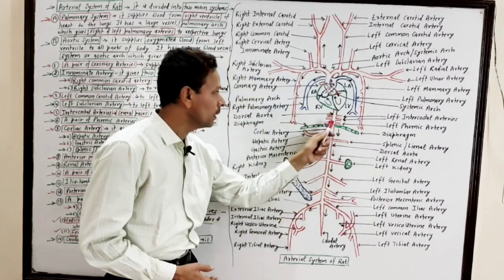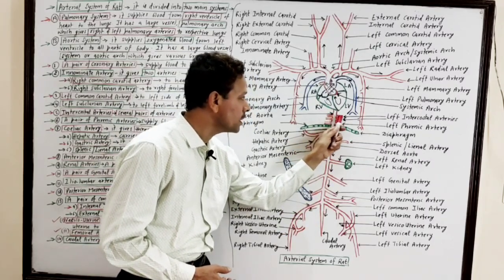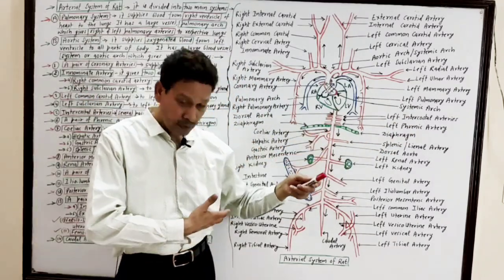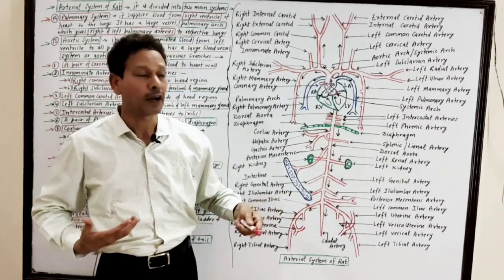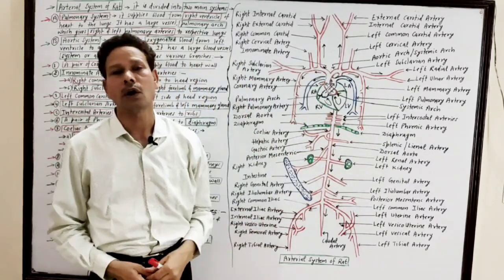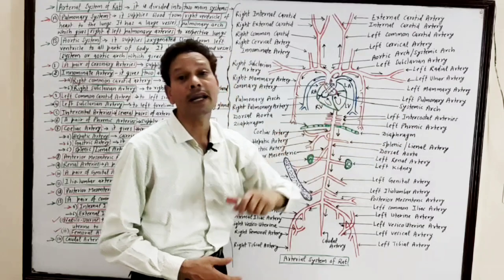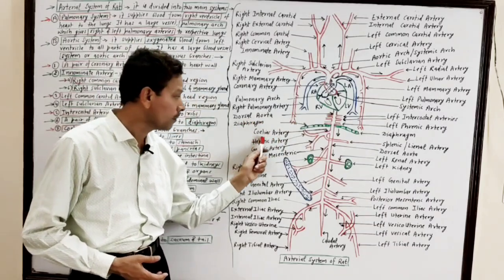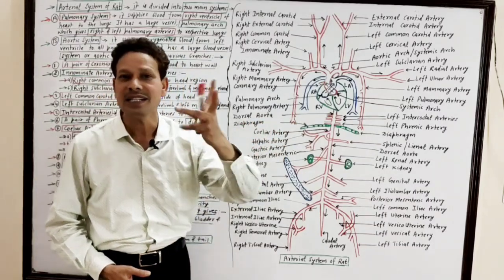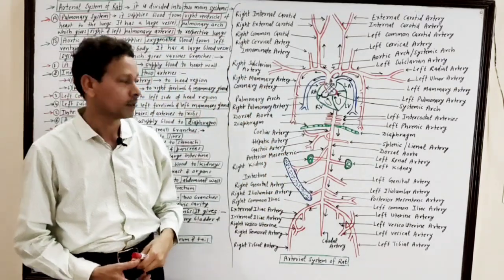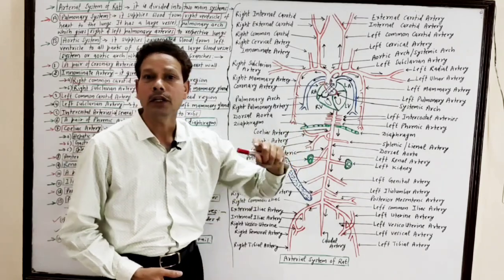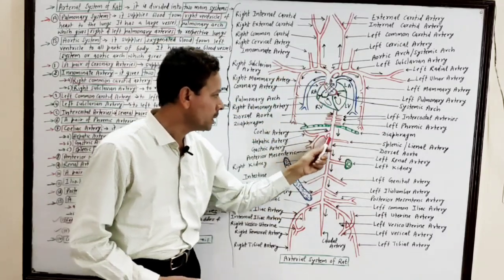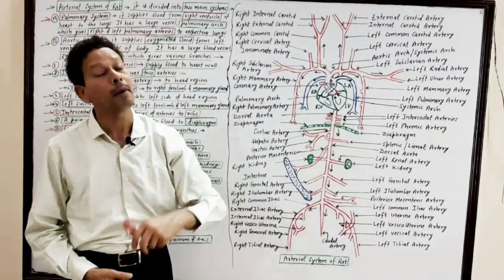The dorsal aorta gives several pairs of intercostal arteries to the thoracic region and ribs. The diaphragm receives oxygenated blood via a pair of phrenic arteries. Then in the abdominal region, a large blood vessel — the celiac artery — divides into three main branches: the hepatic artery to the liver, the gastric artery carrying blood to the stomach, and the splenic or lieneal artery to the spleen and pancreas.